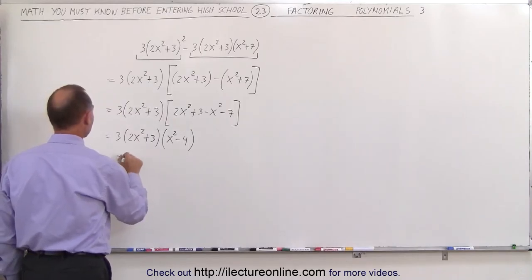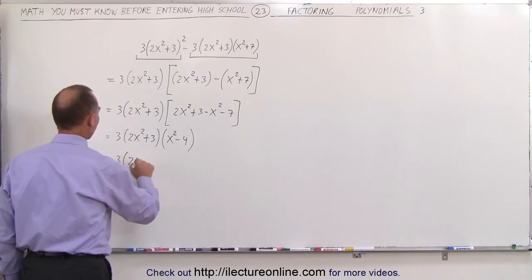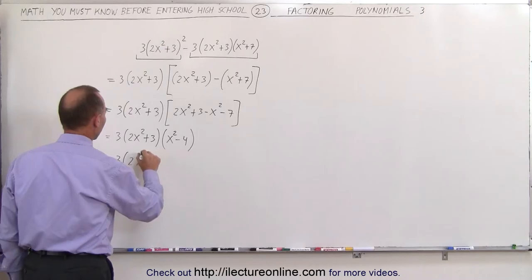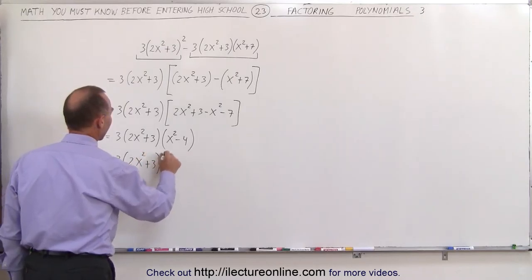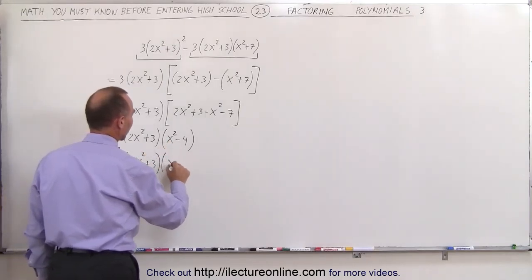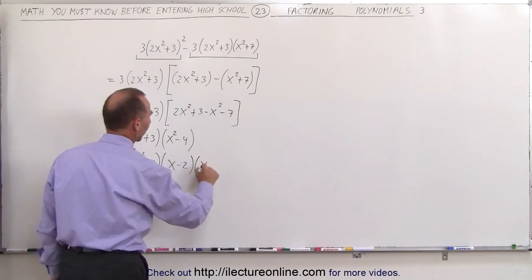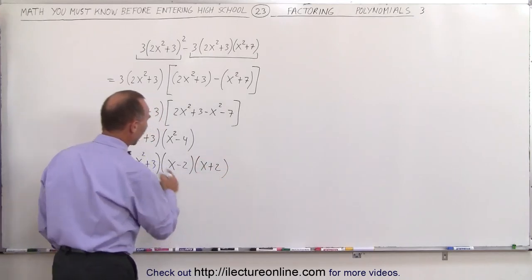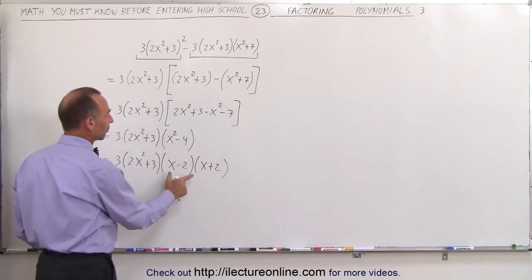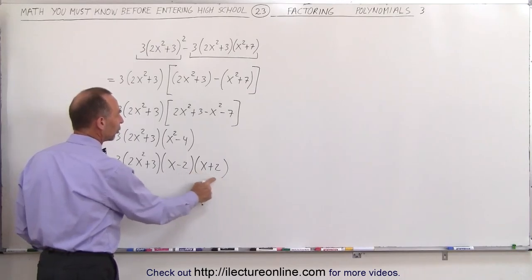So this can now be written as 3 times 2x squared plus 3, and this can be written as x minus 2 times x plus 2. Whenever you have the difference of squares like this, you have to write it as the product of two binomials.